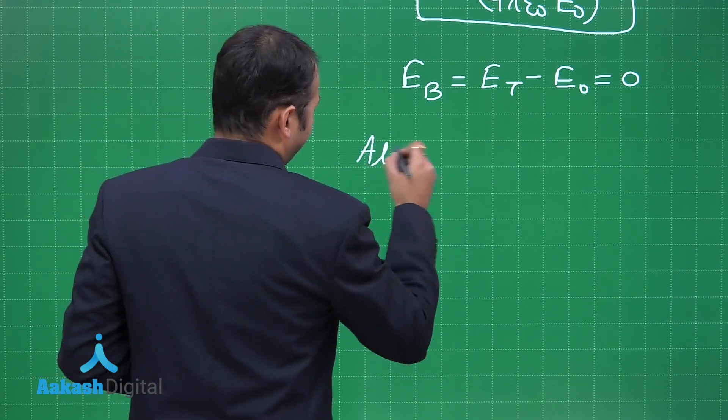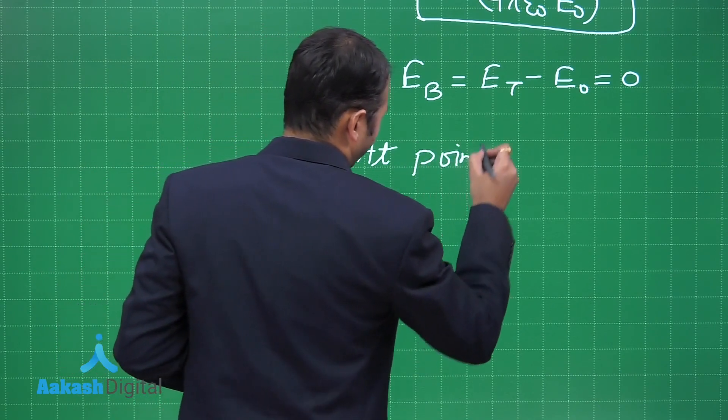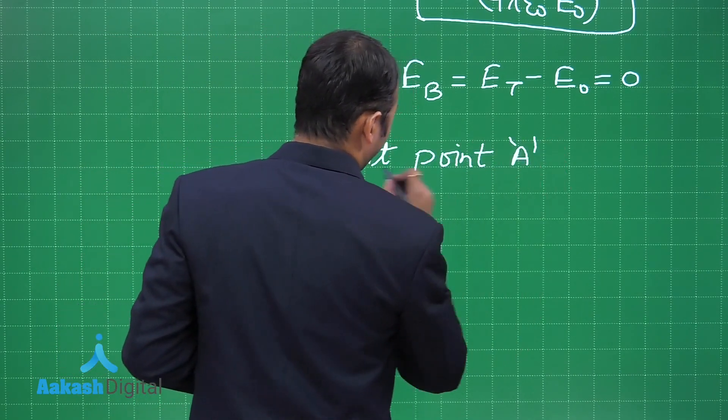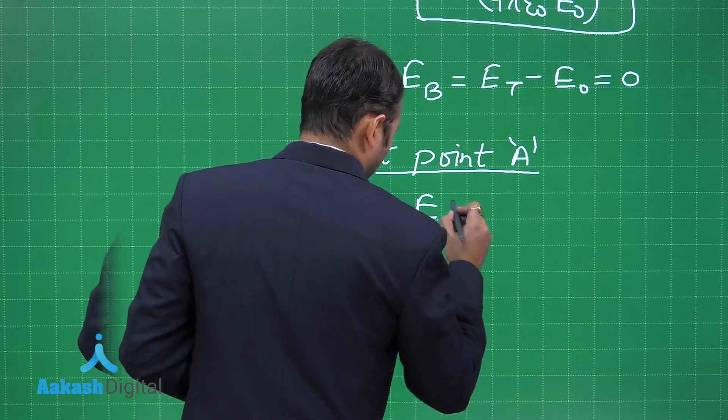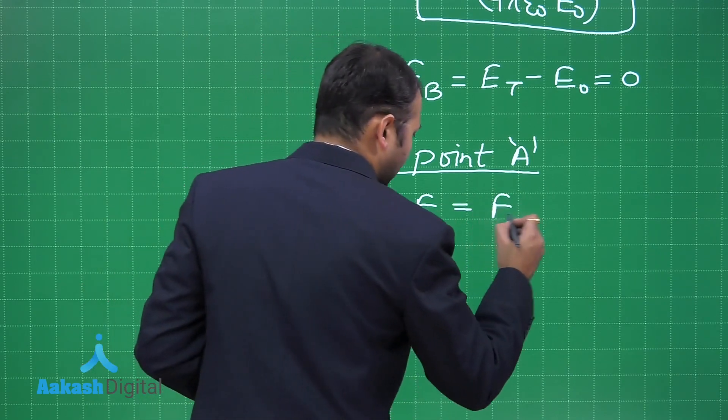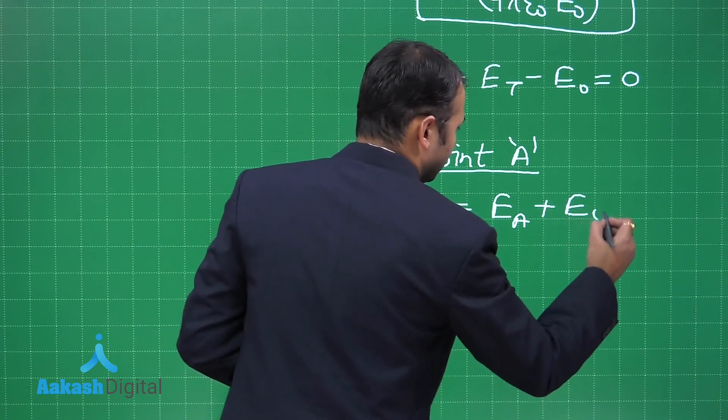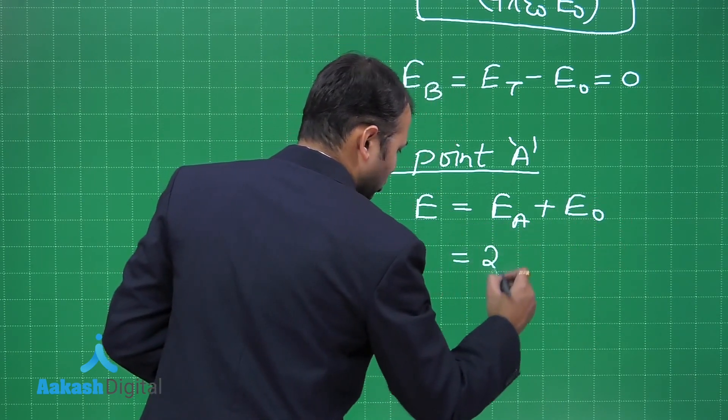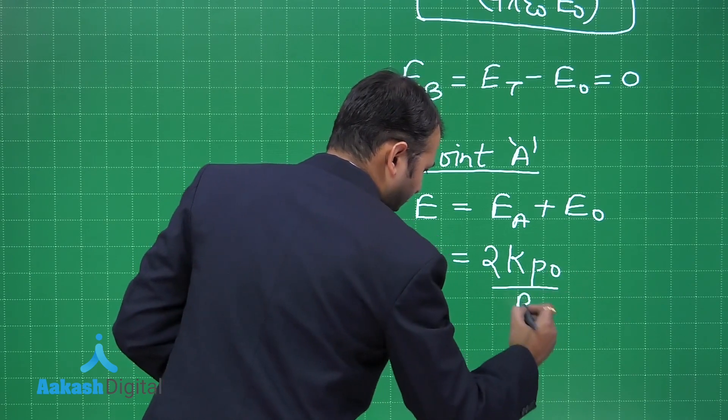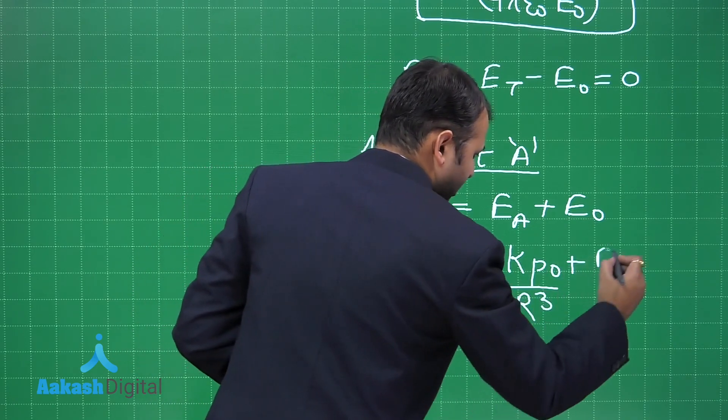When you talk about point A, the net electric field would be sum of E_A and the electric field E₀. Now this is written as 2kP₀/R³ + E₀.